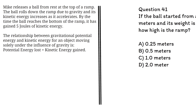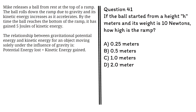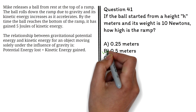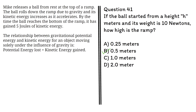Question 41. If the ball started from a height h meters and its weight is 10 newtons, how high is the ramp? A. 0.25 meters. B. 0.5 meters. C. 1.0 meters. D. 2.0 meters. The correct answer is B, 0.5 meters.